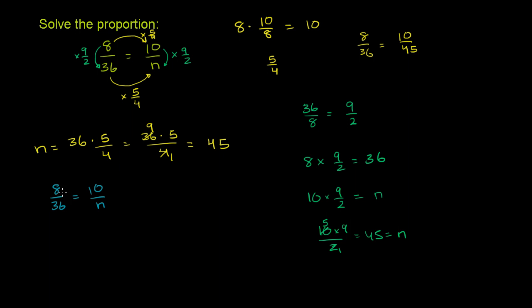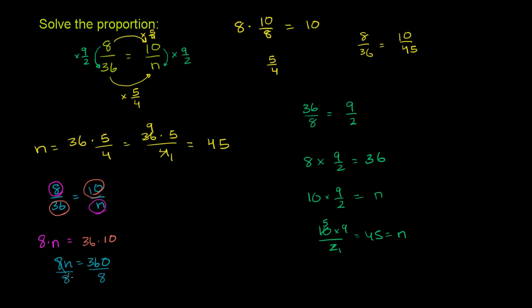When you cross multiply, you're saying that the numerator here times the denominator over there is going to equal the denominator here times the numerator there. So 8 times n is going to be equal to 36 times 10. You could say that 8n is equal to 360. So 8 times what equals 360? To figure that out, you divide 360 by 8. Dividing both sides of the equation by 8, n is equal to 360 divided by 8.